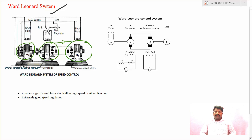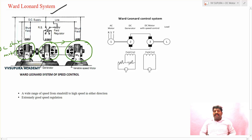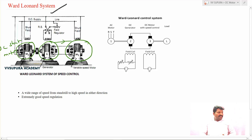If a DC supply is available, a DC shunt motor can be used to drive the generator. If only AC or three-phase AC supply is available, a three-phase AC induction motor is used instead. The DC supply is given to the driving motor and its shunt field winding, and from this the generator produces output.